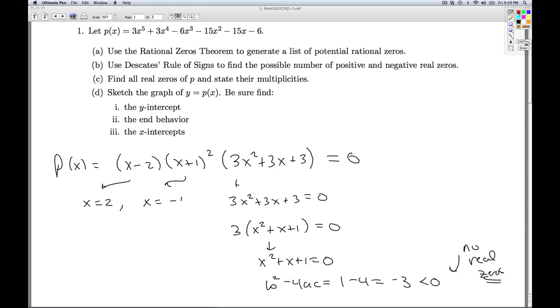So that means that these are the two real zeros, and what are the multiplicities? Well, I look here, the exponent on that quantity is a 1, so this is multiplicity 1, and this guy here, that's multiplicity 2, so that'll do it for part C.